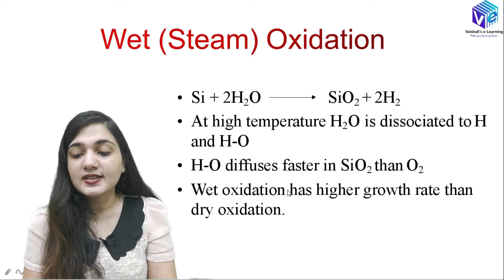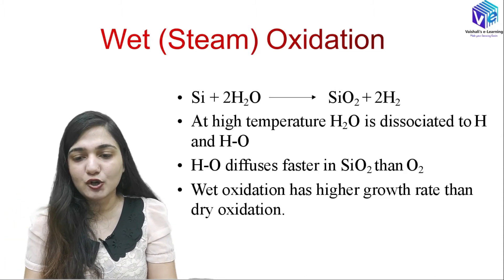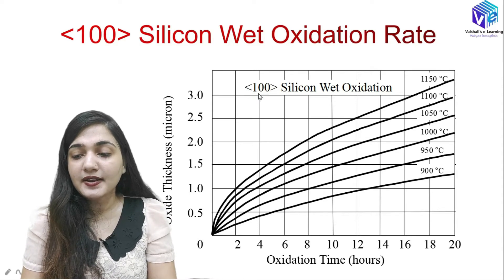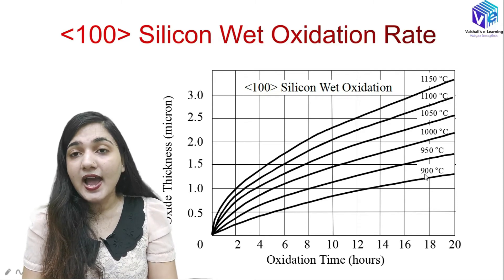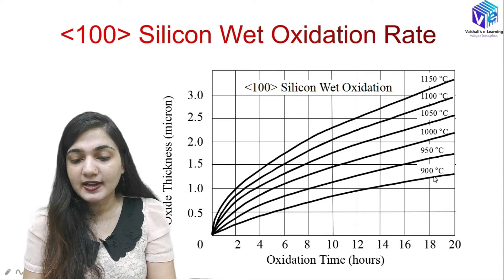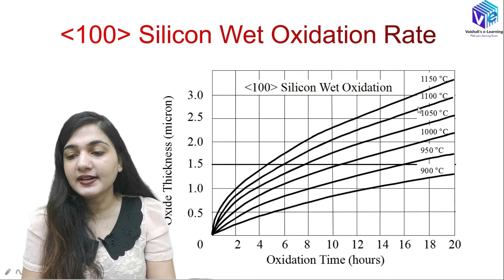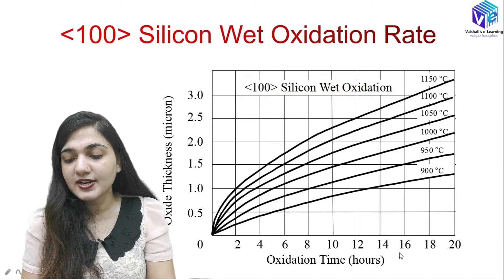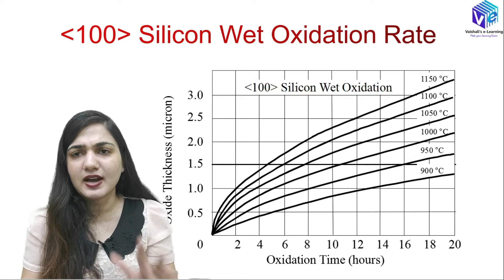Wet oxidation produces a byproduct (hydrogen gas) unlike dry oxidation, but it gives a faster oxide layer. For (100) silicon at 900°C with wet oxidation, we can grow up to 0.2 micron, but at 1150°C we can reach up to 3 microns or more with oxidation times of around 20 hours. So it is a time-consuming process, and various inferences can be drawn from the graph.